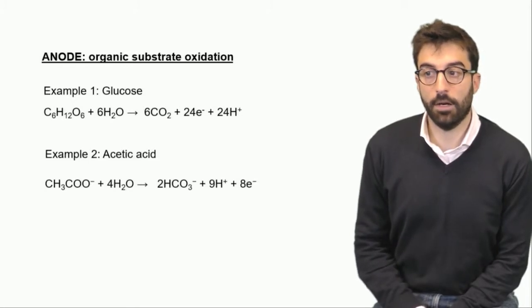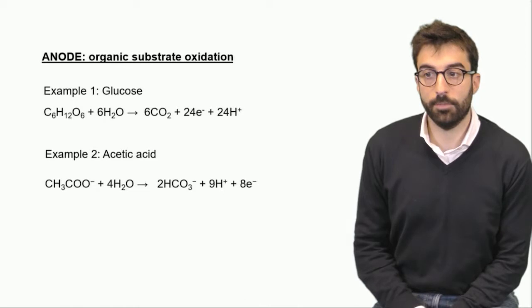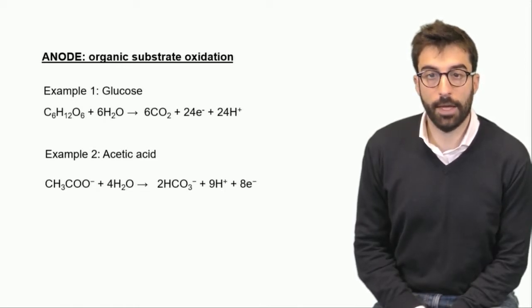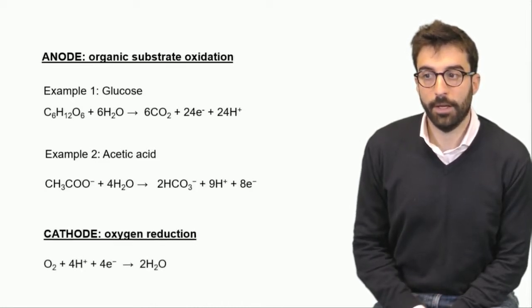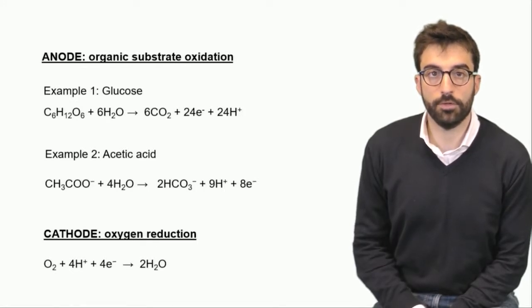Or acetic acid is another possible fuel that has a similar reaction, producing again electrons to the circuit and ions to reach the cathode. Regarding the oxygen reduction, we have a standard reaction typical of oxygen, so we have electrons and protons that react with oxygen to produce water, which is the main product of the cathode.